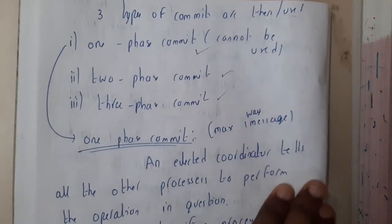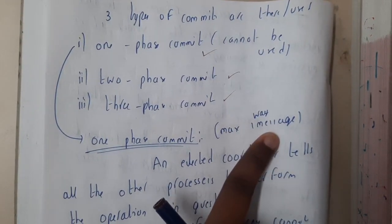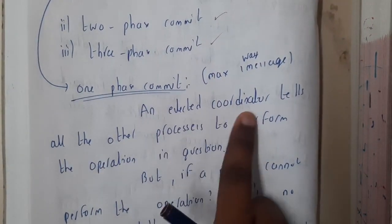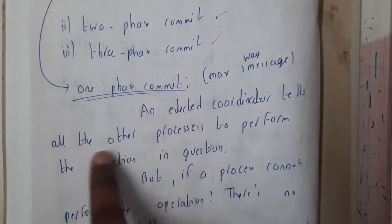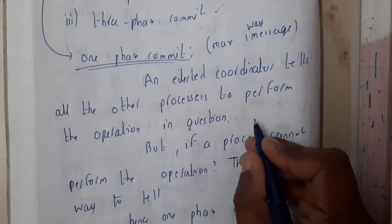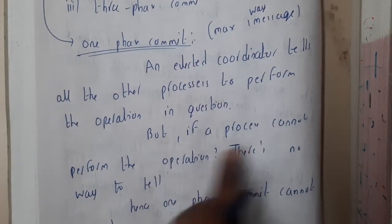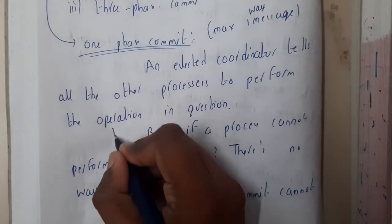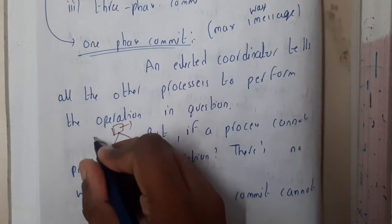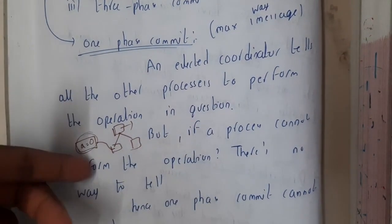One-phase commit is rarely seen in textbooks. It is basically a one-way message: you say to everyone to update and assume that everyone will update. An elected coordinator tells all the other processes to perform the operation in question. For example, you inform everyone to update the value of A to 50 and assume that everyone will do it. But if a process cannot perform the operation — say we have one coordinator and two processes, and one process is already working on value A —